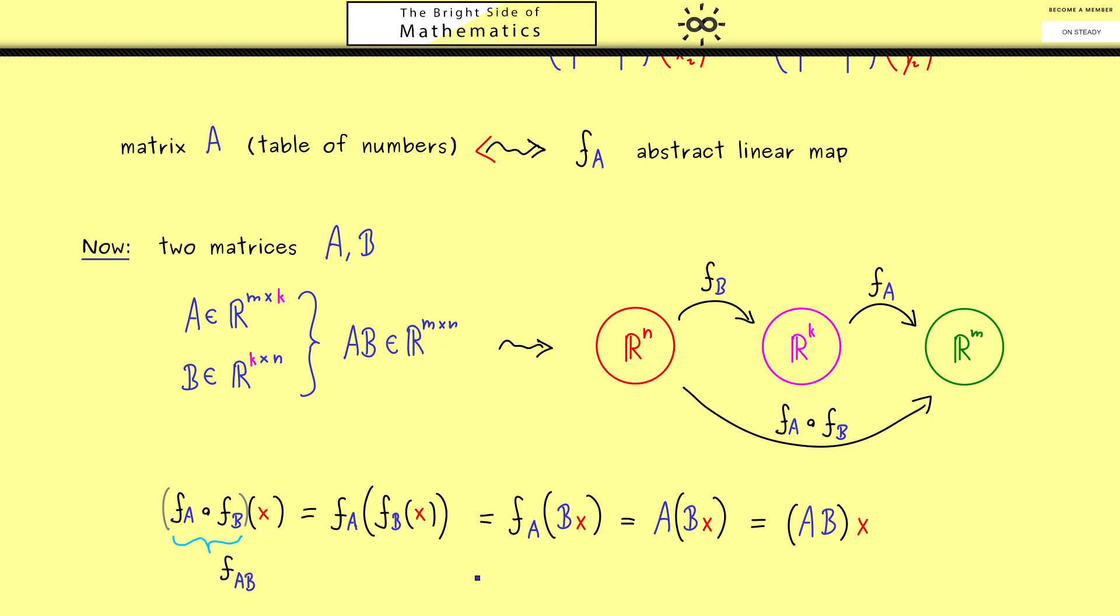Or to put it in other words, this composition is simply given by the linear map corresponding to the matrix AB. Hence, we see that our definition of the matrix product was not arbitrary at all. Indeed, we had to choose it exactly in this way, such that it can represent the composition of linear maps. Or, you could also say it like this, an abstract composition of linear maps can now be calculated with two tables of numbers. Simply because we have the correct multiplication rule.